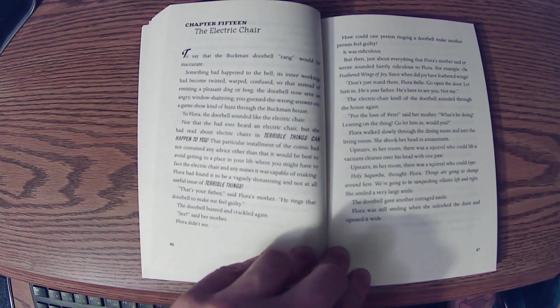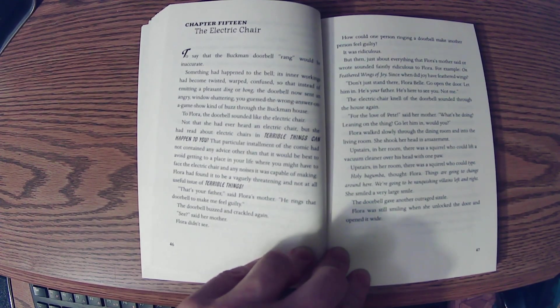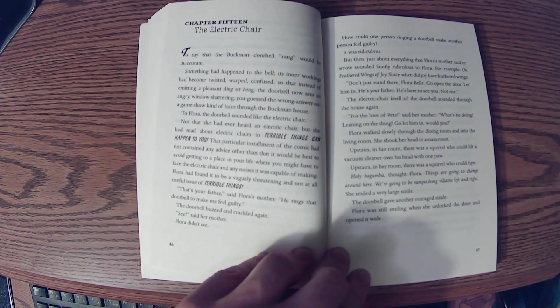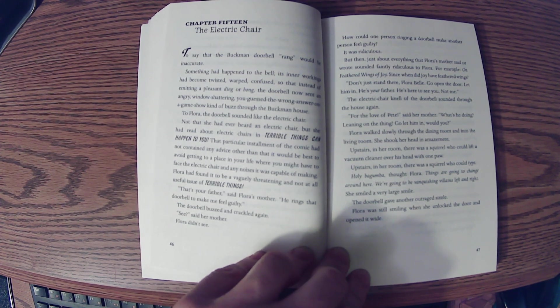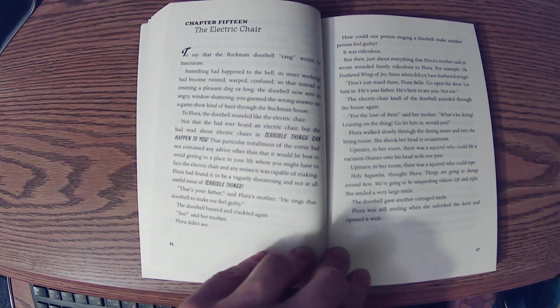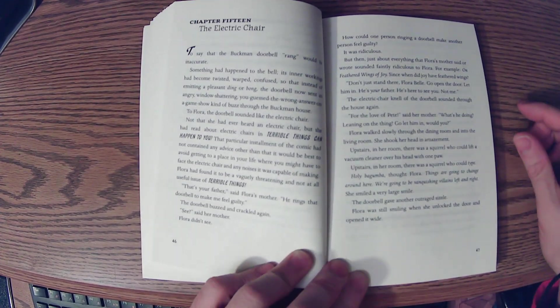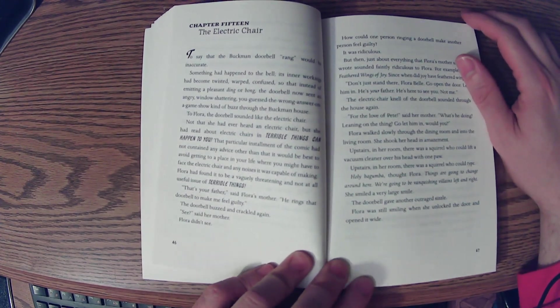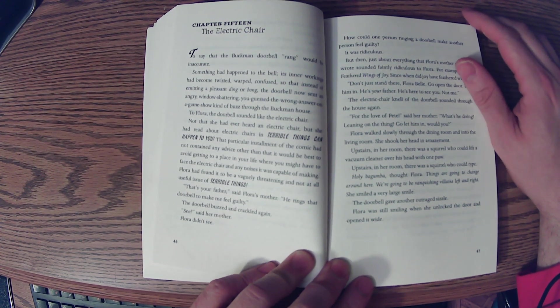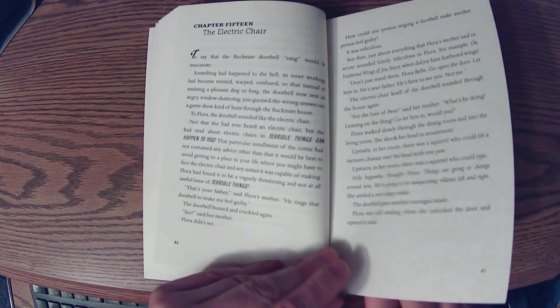Flora walked slowly through the dining room and into the living room. She shook her head in amazement. Upstairs, in her room, there was a squirrel who could lift a vacuum cleaner over his head with one paw. Upstairs, in her room, there was a squirrel who could type. Holy bagumba, thought Flora. Things are going to change around here. We're going to be vanquishing villains left and right. She smiled a very large smile. The doorbell gave another outraged sizzle. Flora was still smiling when she unlocked the door and opened it wide.